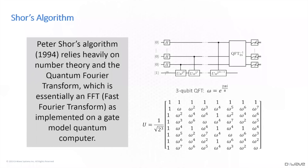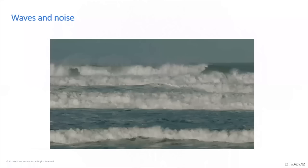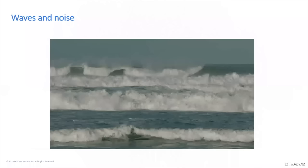Most of the encryption that our modern internet infrastructure sits on top of uses the difficulty of factoring as a guarantee to keep secrets safe. So this would be a dramatic event if we could actually implement this. But there's a big problem associated with this approach, which I'm trying to explain with this graphic here: waves and noise.